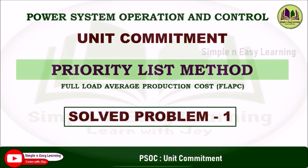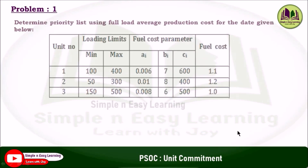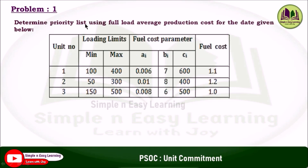Unit commitment in priority list method using full load average production cost (FLAPC) — solved problem one. Determine the priority list using full load average production cost for the data given below.